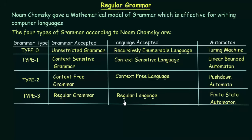The language accepted by Type 3 Grammar is regular languages, which we have already studied in the previous lectures. The automaton used for designing Type 3 Grammar is the Finite State Automaton — that is, the Finite State Machine or Finite State Automata — which we have already studied. For Type 2 Grammar, the grammar accepted is Context Free Grammar, and the automaton used is the Pushdown Automaton.